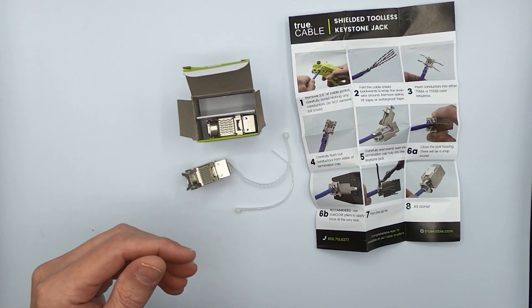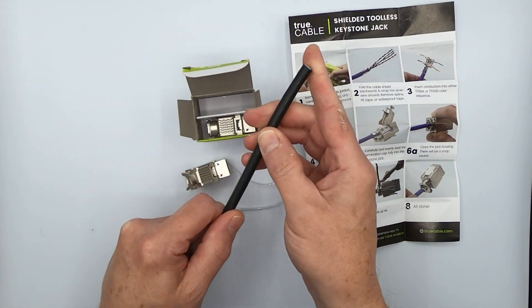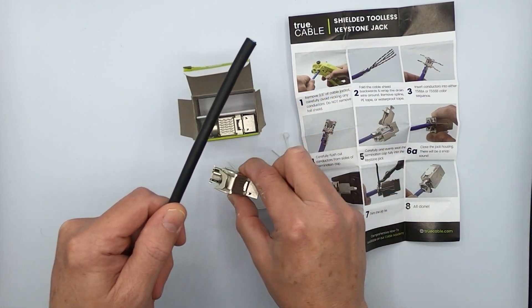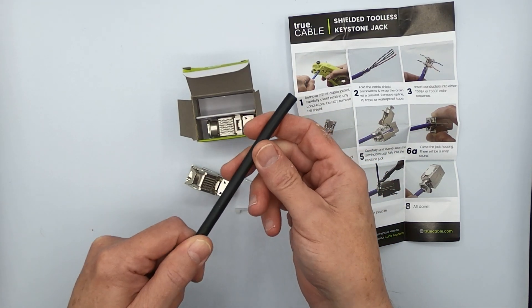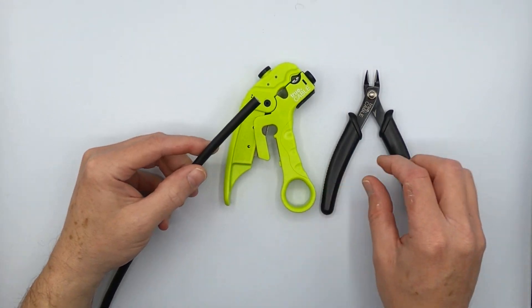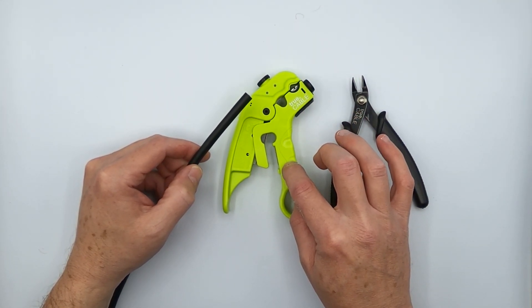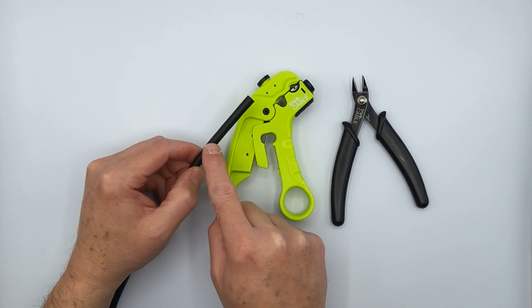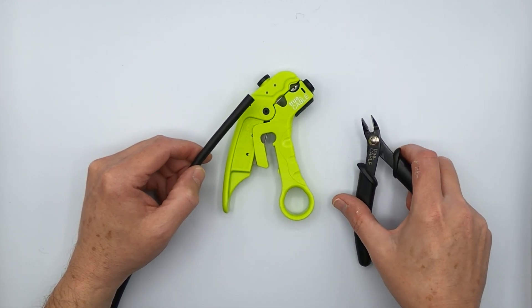Today why don't we demonstrate one of our most challenging cables to work with on this particular jack. This is our Category 6 shielded direct burial. So a couple of tools you're absolutely going to have to have: you're going to want flush cutters, and you're going to want a strip tool. We're dealing with a pretty tough jacket here.